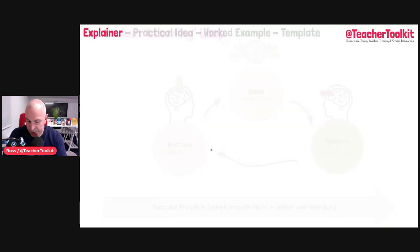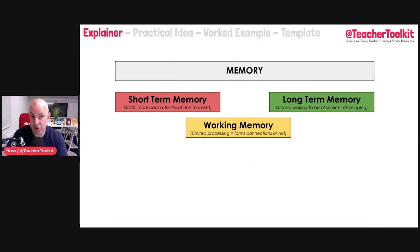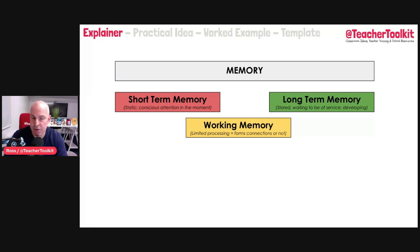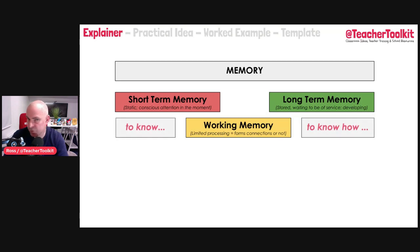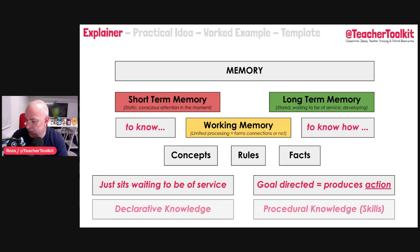A little recap: short-term is conscious right now. Working memory — who was the first wife of Henry VIII? What's 2 plus 2? What's the second planet in the solar system? I quiz rather than reteach. Long-term memory: we're building schema, adding further knowledge, categorizing information. We can start to see how we form concepts, rules, and facts — shaping memory waiting to be of service, making the unconscious long-term memory explicit, implicit, and declarable. Declarative knowledge: I can write it, I can say it.